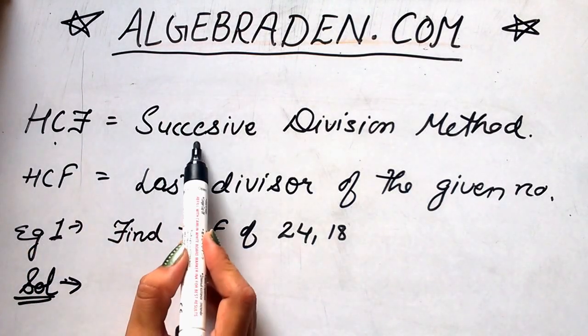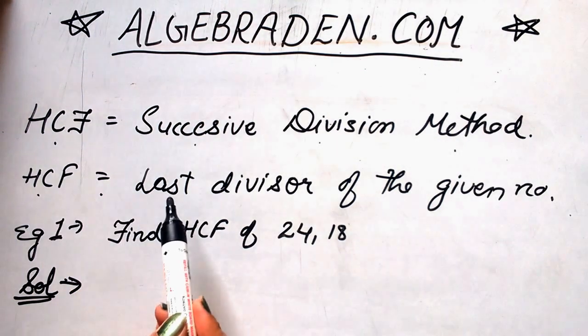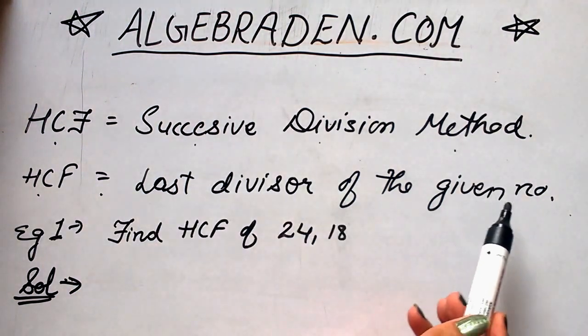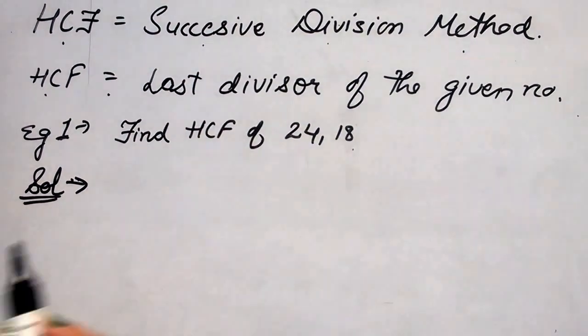Calculate HCF by successive division method. HCF is equal to last divisor of the given number. For example, find HCF of 24 and 18.